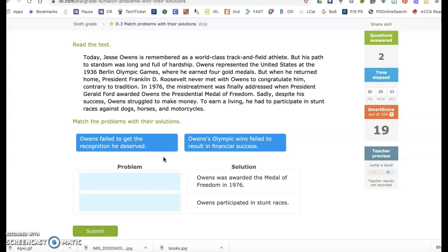Today, Jesse Owens is remembered as a world-class track and field athlete, but his path to stardom was long and full of hardship. Owens represented the United States at the 1936 Berlin Olympic Games, where he earned four gold medals. But when he returned home, President Franklin D. Roosevelt never met with Owens to congratulate him, contrary to tradition. In 1976, the mistreatment was finally addressed when President Gerald Ford awarded Owens the Presidential Medal of Freedom. Sadly, despite his success, Owens struggled to make money. To earn a living, he had to participate in stunt races against dogs, horses, and motorcycles.